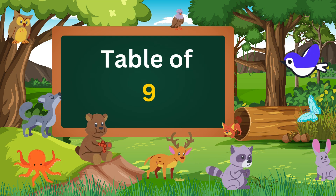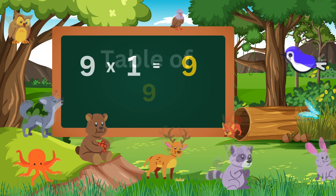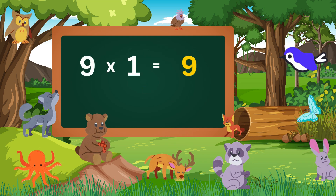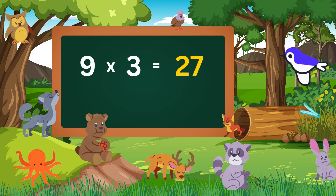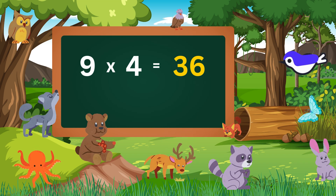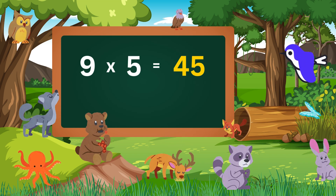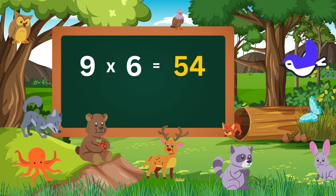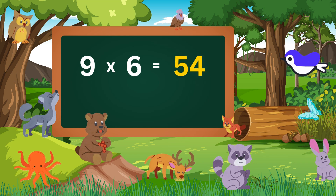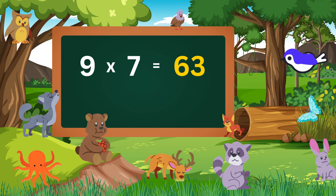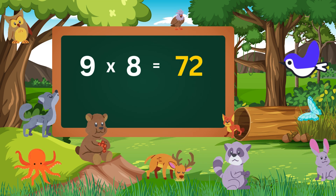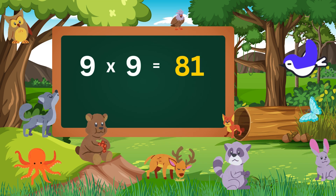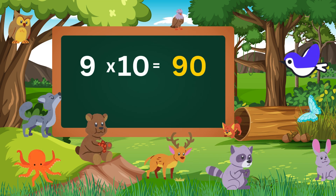Table of nine. Nine ones are nine. Nine twos are eighteen. Nine threes are twenty-seven. Nine fours are thirty-six. Nine fives are forty-five. Nine sixes are fifty-four. Nine sevens are sixty-three. Nine eights are seventy-two. Nine nines are eighty-one. Nine tens are ninety.